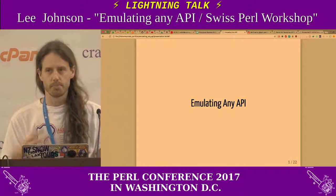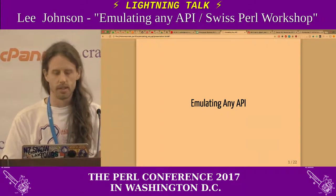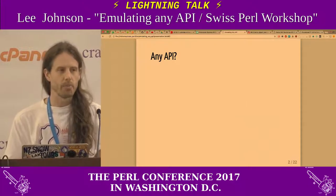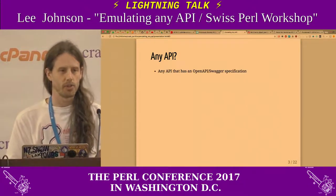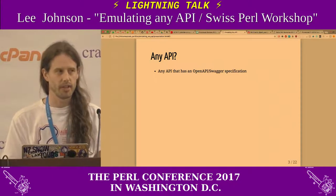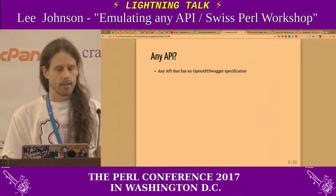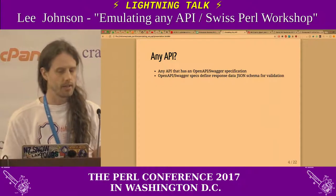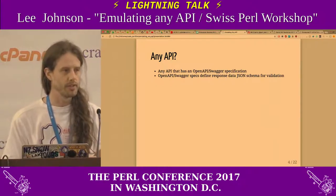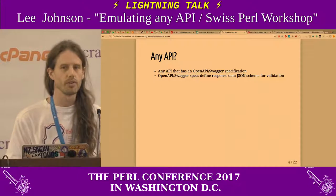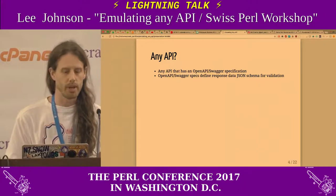So I thought, how can we make that easier? Emulating any API — when I say that, I mean any API that has an OpenAPI or a Swagger specification, so it's not really any API, that's the first caveat. What we have in those specifications are JSON schema, which define the JSON that we expect to receive. So I thought maybe we can use that to construct the JSON that we get back.